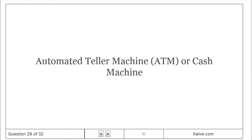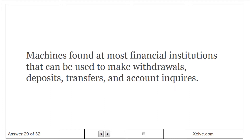Automated teller machine, or cash machine. Machines found at most financial institutions that can be used to make withdrawals, deposits, transfers, and account inquiries.